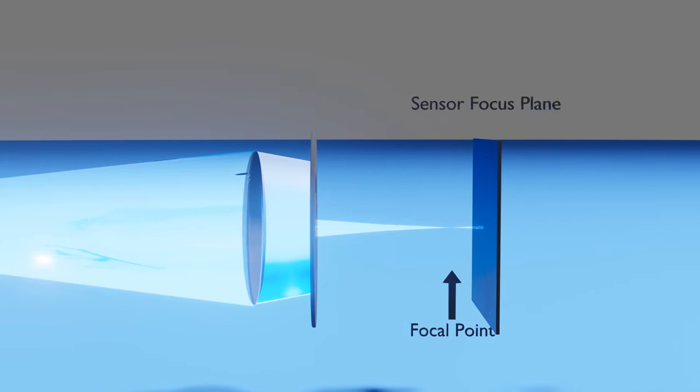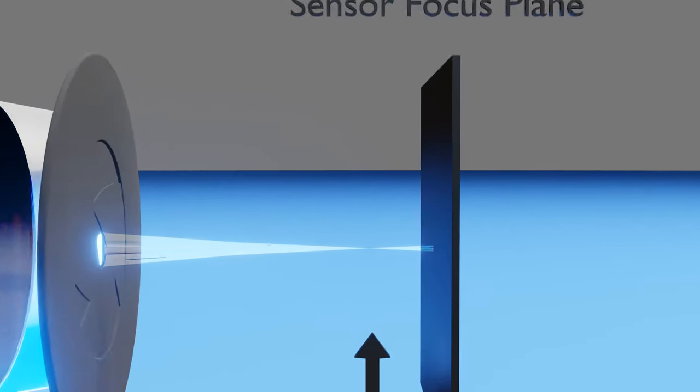Although these rays will once again converge into a focal point before the sensor, look how gradual these rays are propagating. As the rays pass the focal point and hit the sensor, they are acceptably in focus.